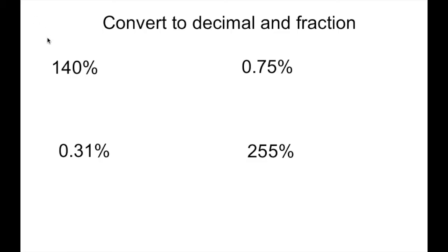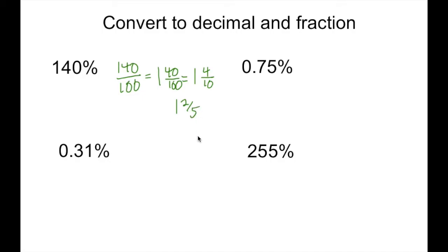Let's see how you did. For the first one — 140% — you can put 140 over 100, which gives you 1 and 40 one-hundredths. We can simplify that to 1 and 4 tenths, which simplifies further to 1 and 2 fifths. And for the decimal, we move the decimal point over two places — one, two — so that gives us 1.4. So there's our decimal and our fraction.